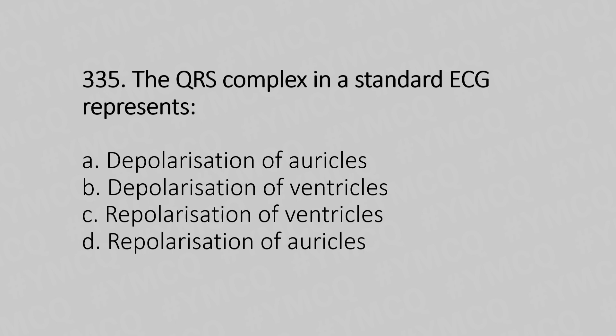Question number 335: The QRS complex in a standard ECG represents — option A: depolarization of the atria. Option B: depolarization of the ventricles. Option C: repolarization of the ventricles. Option D: repolarization of the atria. The answer is option B, depolarization of the ventricles.